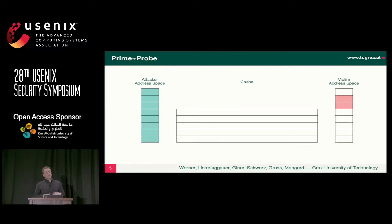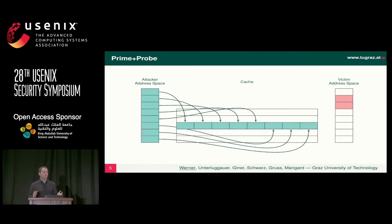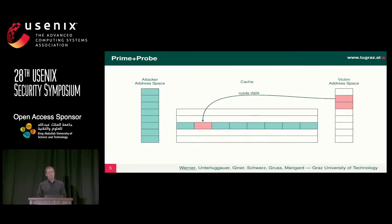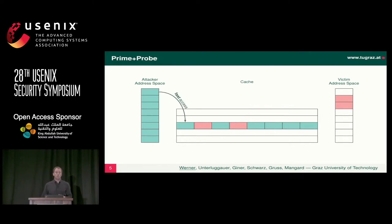There are attacks which exploit this structure and the fact that we can see timing differences and know if there are hits or misses. That's Prime+Probe, for example. The idea is pretty simple: the attacker uses his knowledge of the cache and in a prime step fills a whole cache set with his data. Then he lets the victim execute. The victim performs his accesses and evicts some of the attacker's data. In the probe step, the attacker probes his own data — if the access is fast, it's still there; if it's slow, there was a victim access in between.